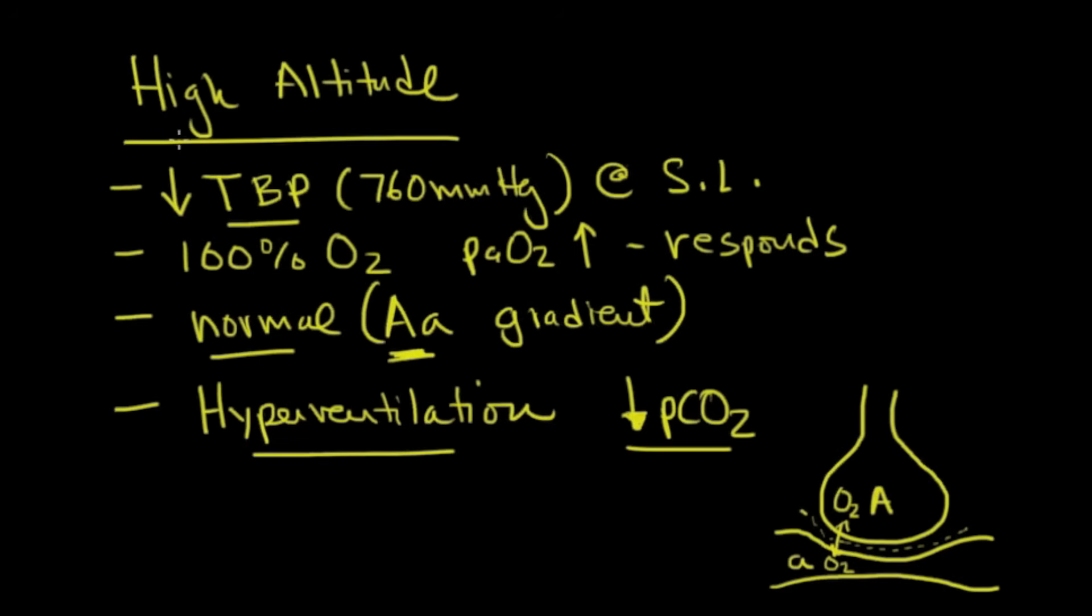So again, high altitude is a result of total barometric pressure going down. It responds to 100% oxygen. The PaO2 goes up when you put someone on 100% oxygen. The AA gradient is normal and the body's response to this is to hyperventilate. This is why you see people hyperventilating at high altitude. It's to get their PaO2 up.